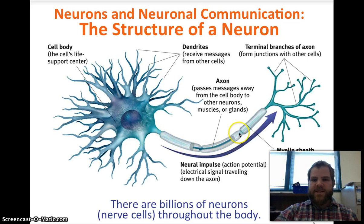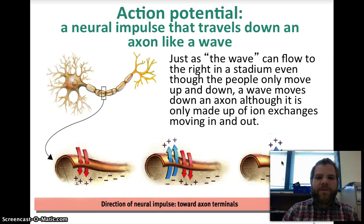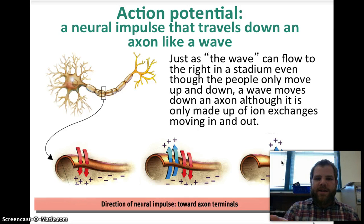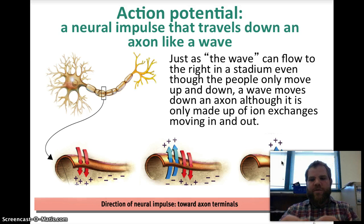After the neural impulse travels through the axon, it goes through the terminal branches of the axon, which reach out to the dendrites of another neuron — that's how communication happens. The action potential travels down the axon like a wave — like the wave in sports stadiums where one person goes up and the next person follows. A wave moves down an axon through ion exchanges moving in and out: the positive goes in, the negative goes out, and it waves itself down.